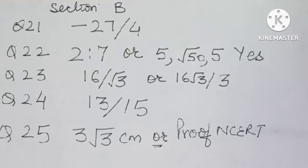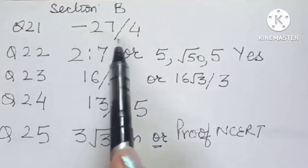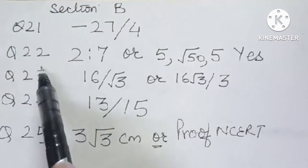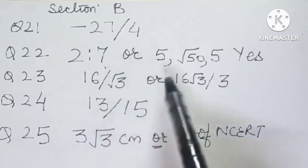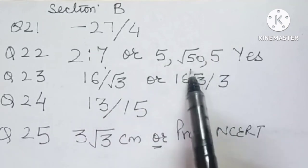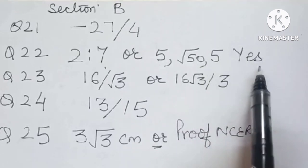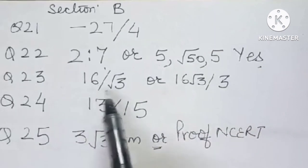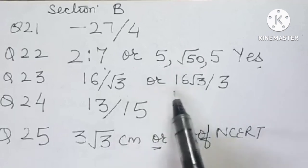Let's see section B. Question number 21 is minus 27 by 4. Question number 22 is 2 is to 7, and all part is 5, root 50 and 5. So yes, it is an isosceles triangle. Question number 23 is 16 root 3 by 3 after rationalization.